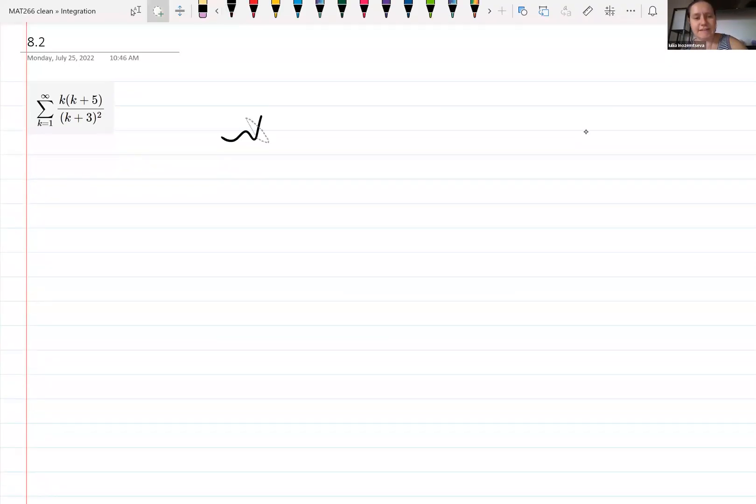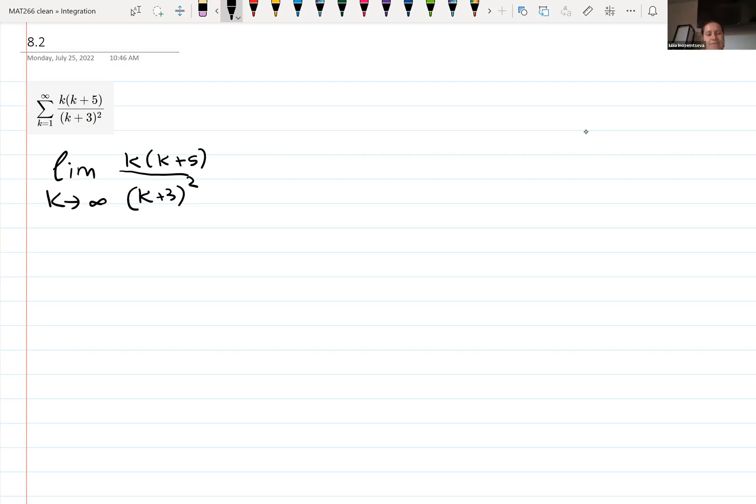So for the series and sequences, the beginning is the same. You start with the limit. For a while we'll be doing exactly the same thing all the time. So we're going to figure out the limit of k times k plus 5 over k plus 3 squared, as k goes to infinity.